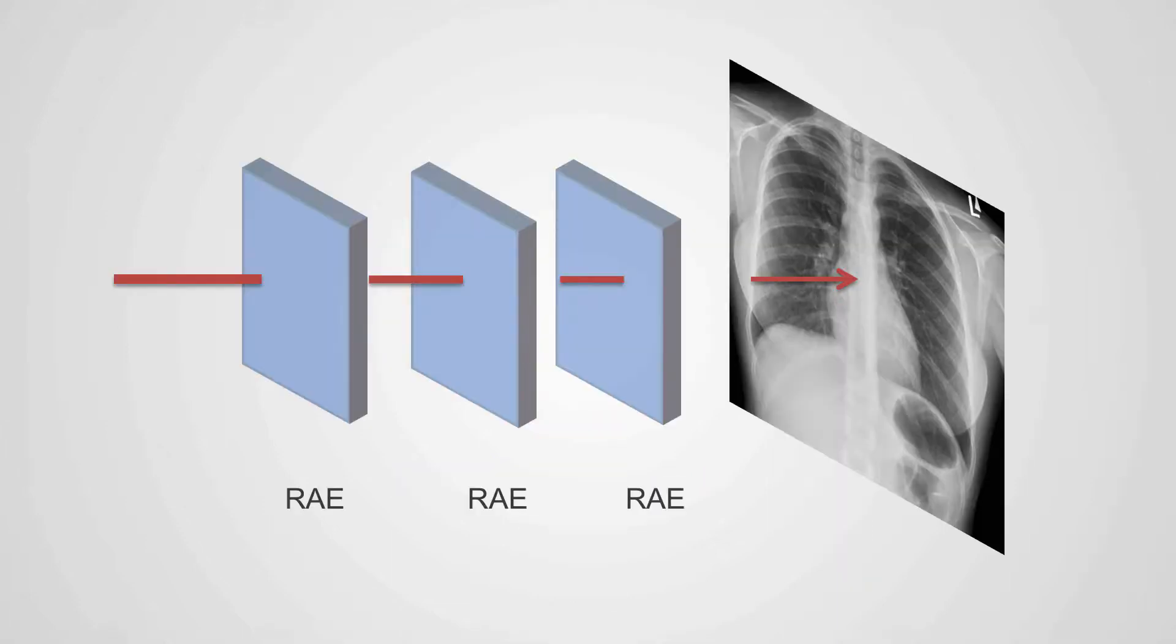Unfortunately, the anatomy of the thorax is three-dimensional and complex, so the x-ray beam, when it courses through the body, will hit a number of different tissues of varying density.